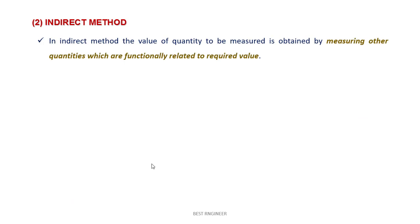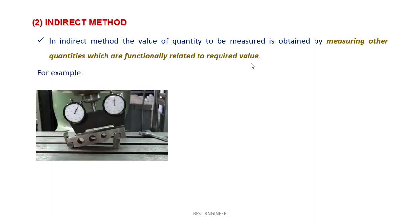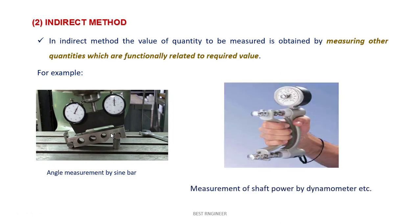Indirect method. In indirect method, value of the quantity to be measured is obtained by measuring other quantities which are functionally related to required value. For example, sine bar, angle alignment by sine bar. We would measure the sum of the angle with the help of the slip gauges. So this measurement is related with some other equipment. It is called indirect method measurement. Another example, measurement of shaft power by dynamometer.